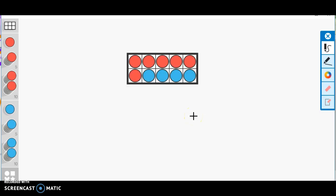This is a great example of part-part-whole because I have a part of six red and four blue. So one part is six, another part is four, and that gives me a whole of ten.